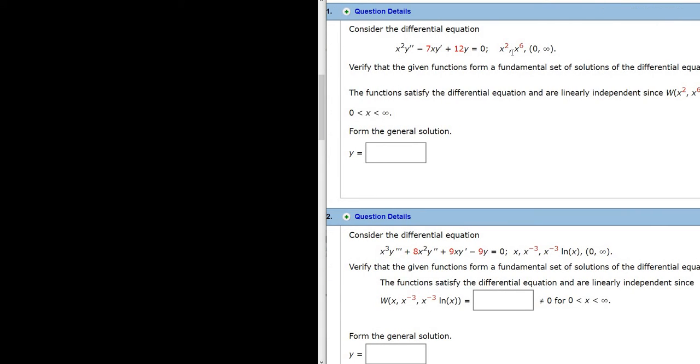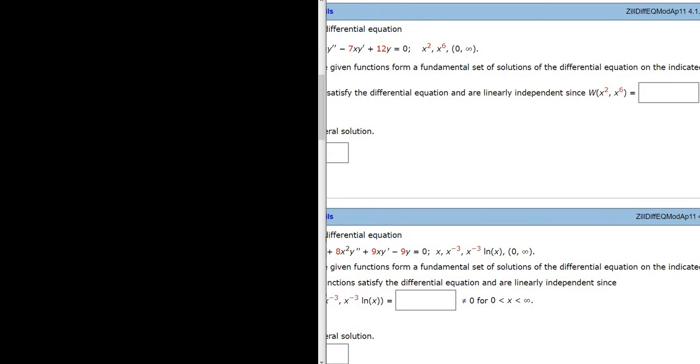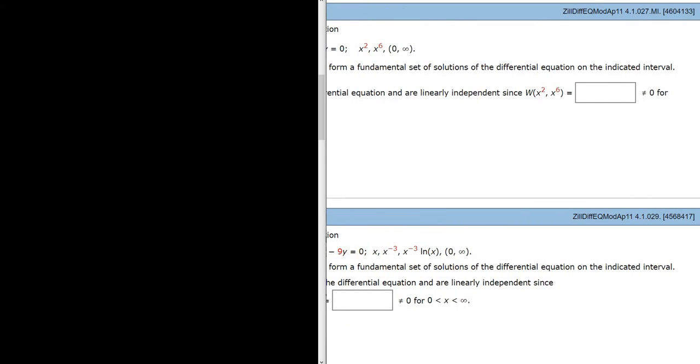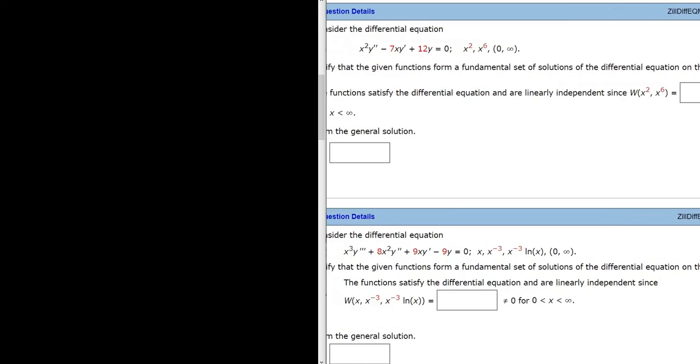So basically all we have to do in this problem is compute the Wronskian of these two functions and fill in the blank. And because the Wronskian will not be 0, that means that the functions will be linearly independent.